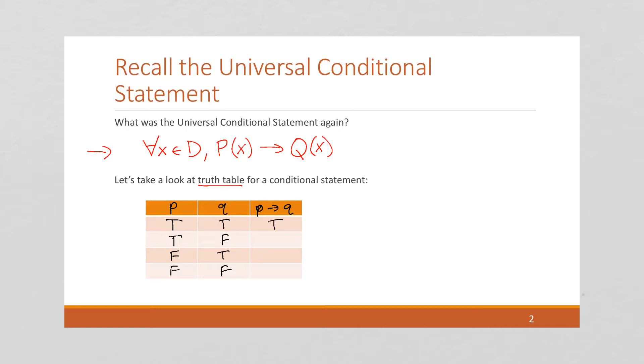True implies true is true. True implies false is false. And the last two rows are vacuous truths, so those are true as well. Let's think about this for a minute. If we're trying to prove this statement p implies q, there's actually three ways of doing that. This first row, it's true. And these last two rows, it's true. The only row that's not true is that second row.